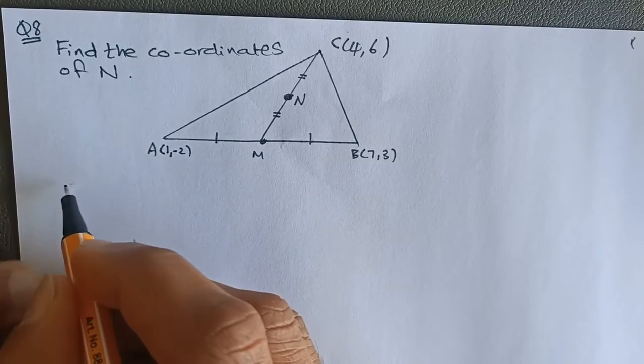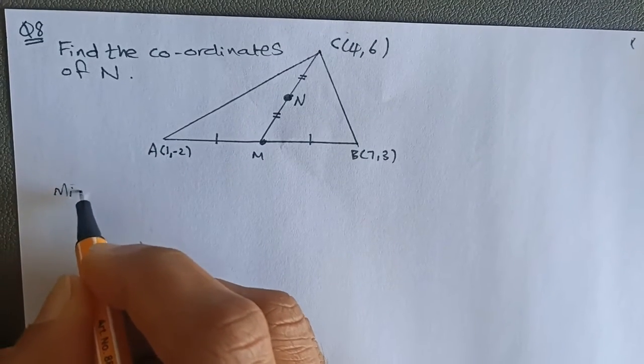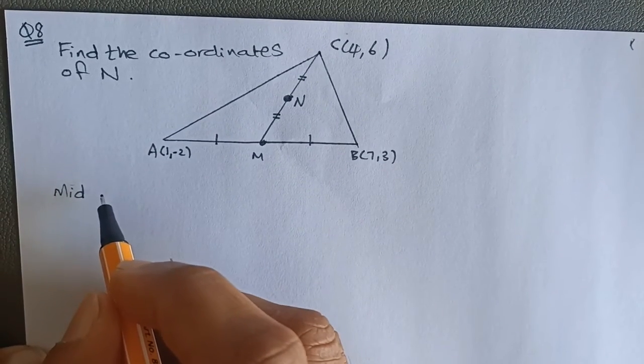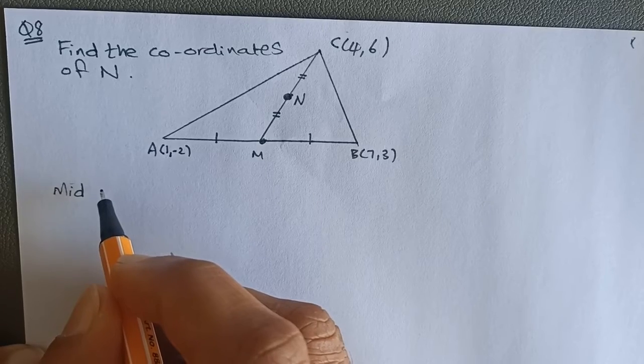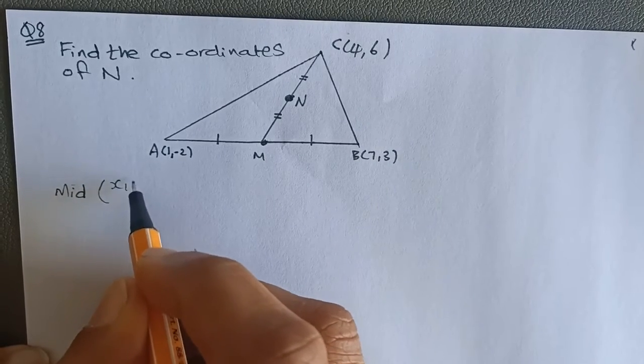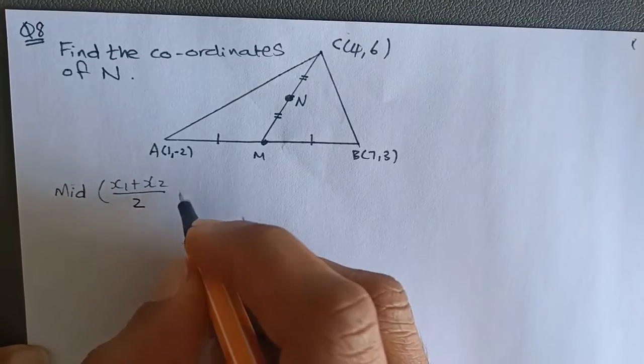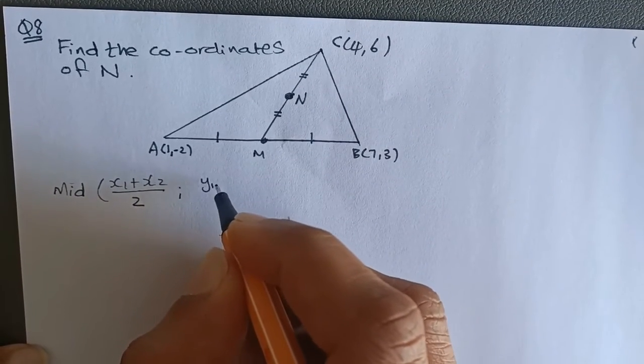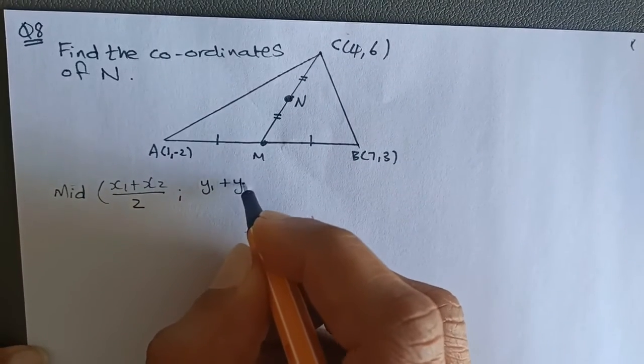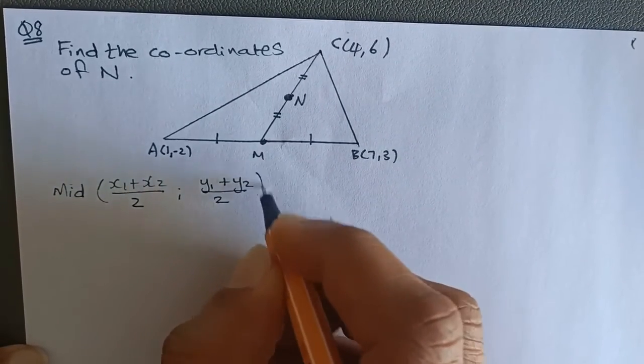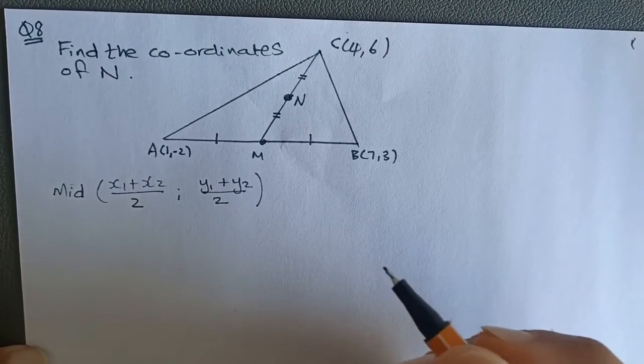The formula for the midpoint of any line is given by x1 plus x2 divided by 2 - that's the x coordinate of the midpoint - and y1 plus y2 divided by 2 - that's the y coordinate of the midpoint.